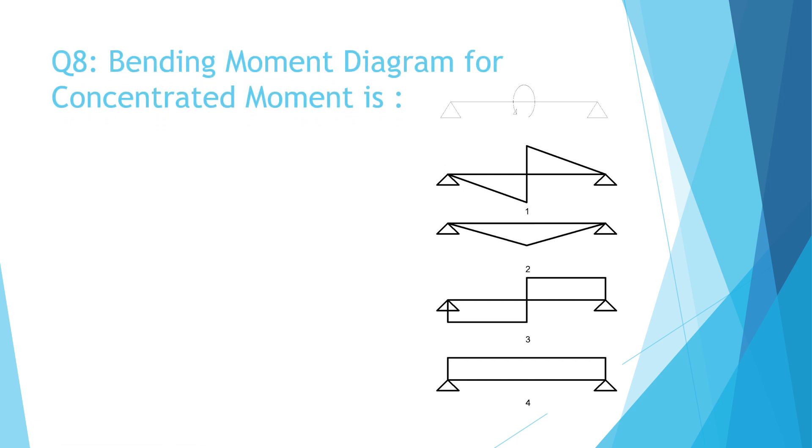Question number eight. Bending moment diagram for concentrated moment is. A. Figure number one. B. Figure number two. C. Figure number three. D. Figure number four. The correct answer is A, figure number one.